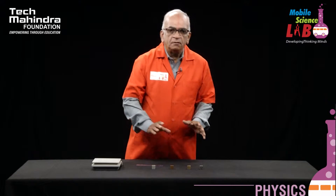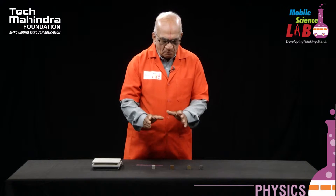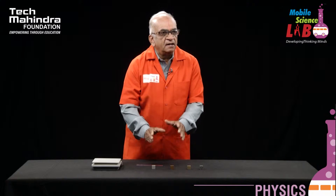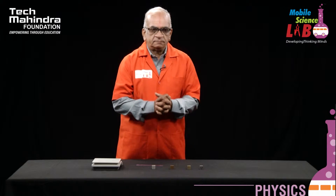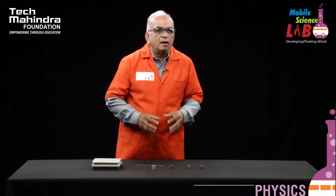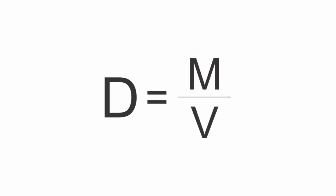We have to measure the density of these materials. Density can be defined as mass per unit volume. The formula is D equals m divided by v, as displayed there.